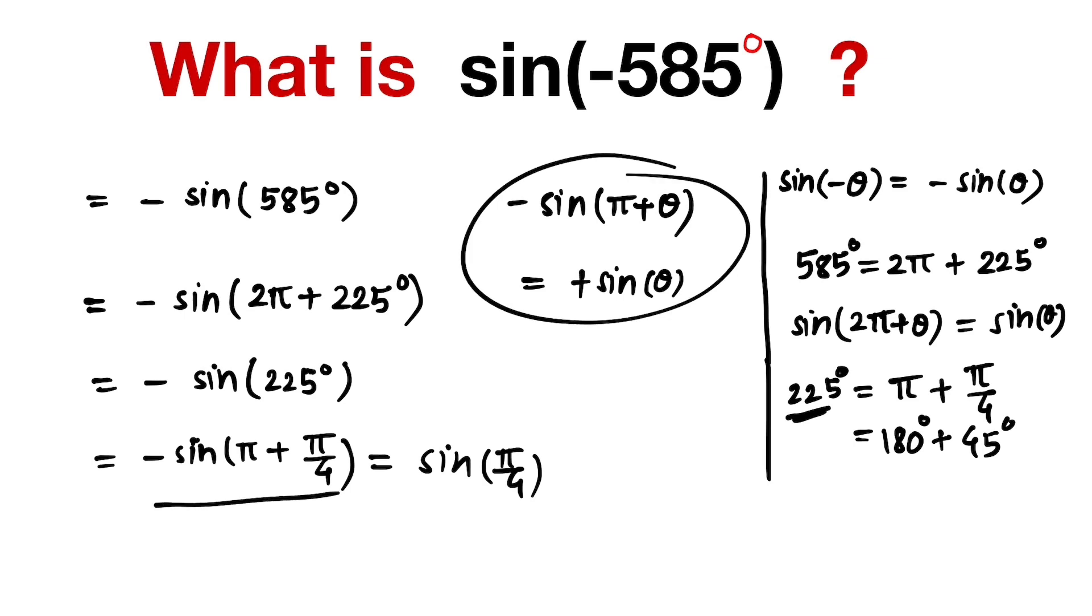But sine π/4 equals 1 over root 2. So the value of sine of minus 585 degrees equals 1 over root 2.